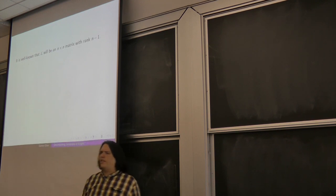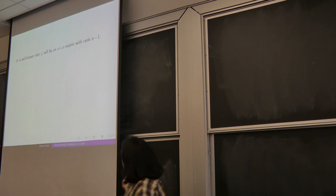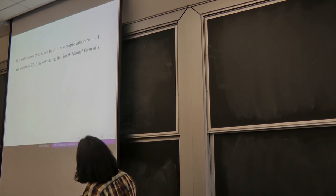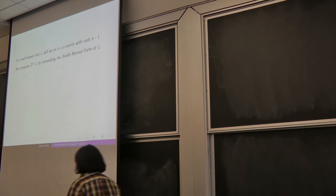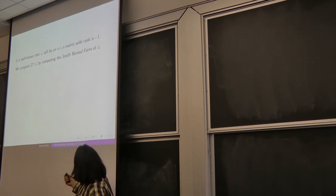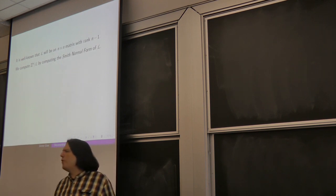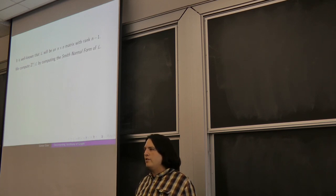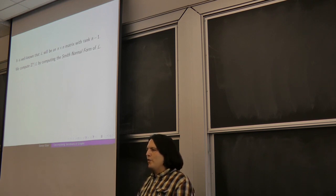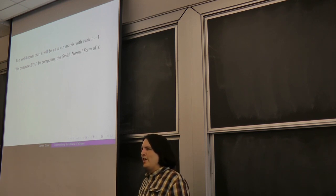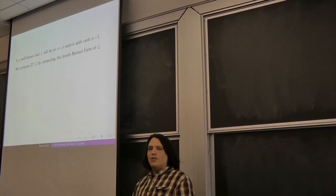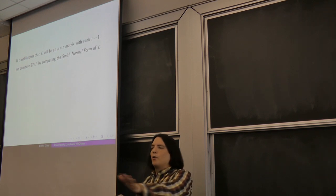It's well known that the Laplacian on a finite connected graph is an n×n matrix with rank n−1. We can compute the Jacobian Z^n mod L by looking at the Smith normal form of the matrix L. I've given a few talks on this topic and sometimes everyone in the room knows Smith normal form, and other times no one has heard of it — so I'll remind you either way.